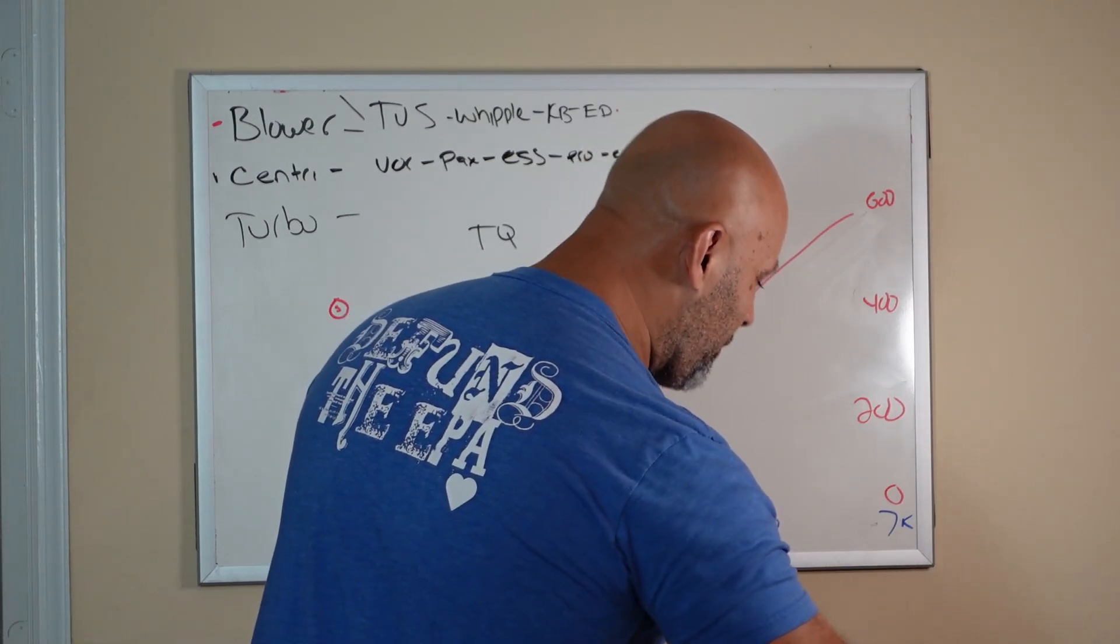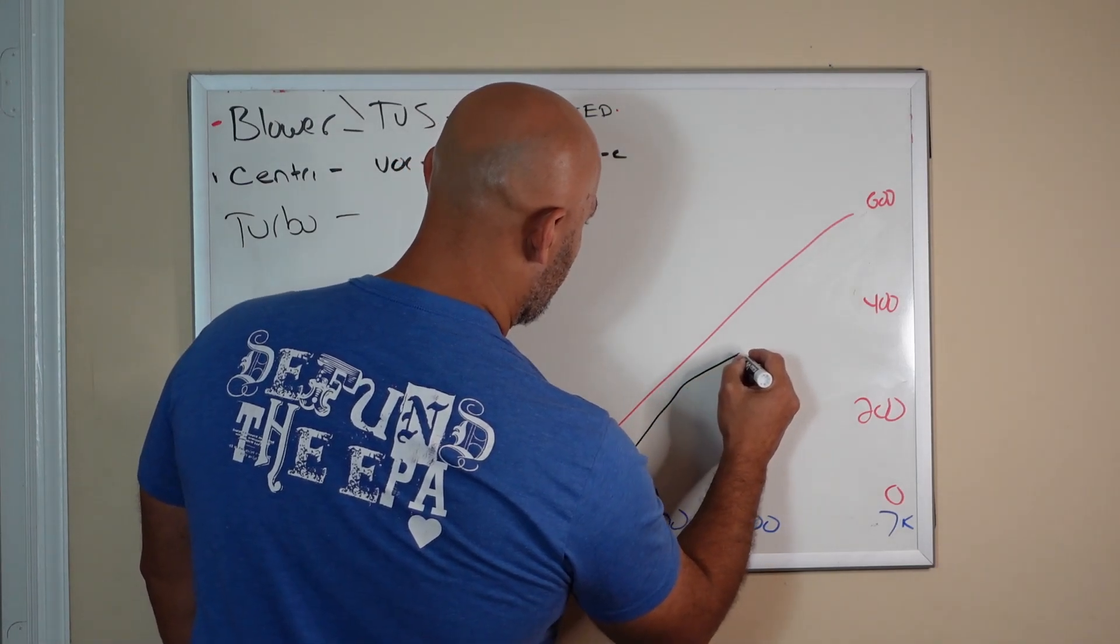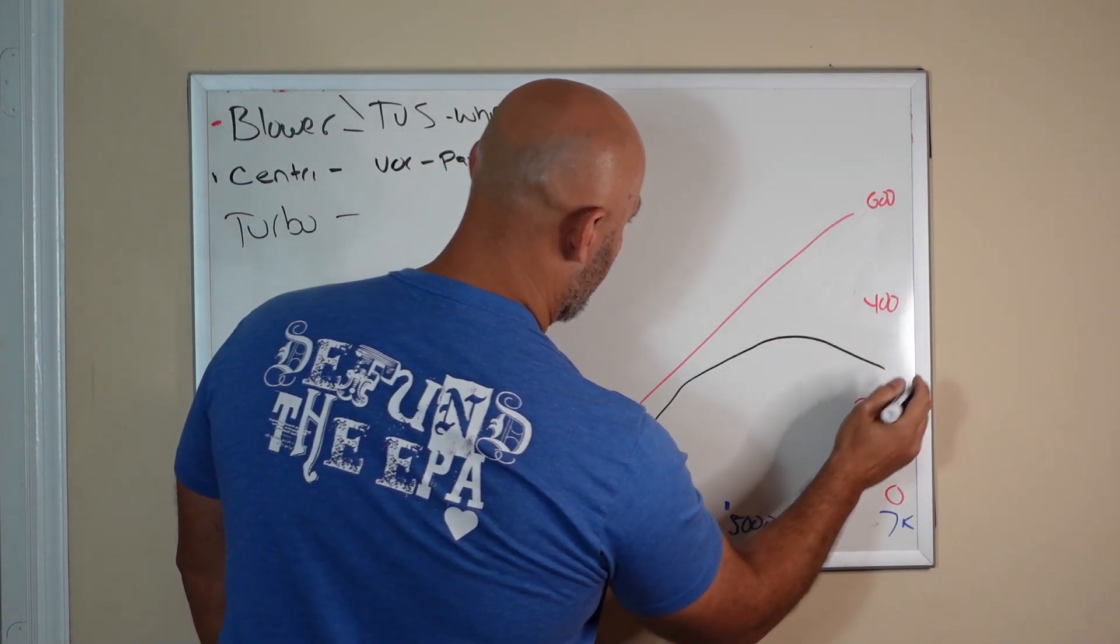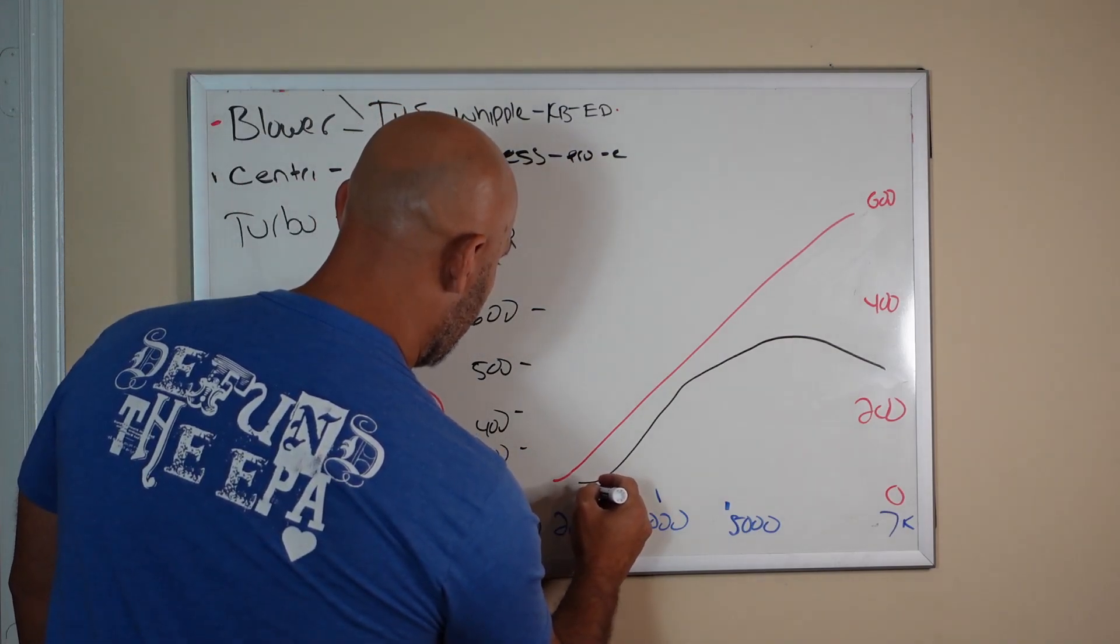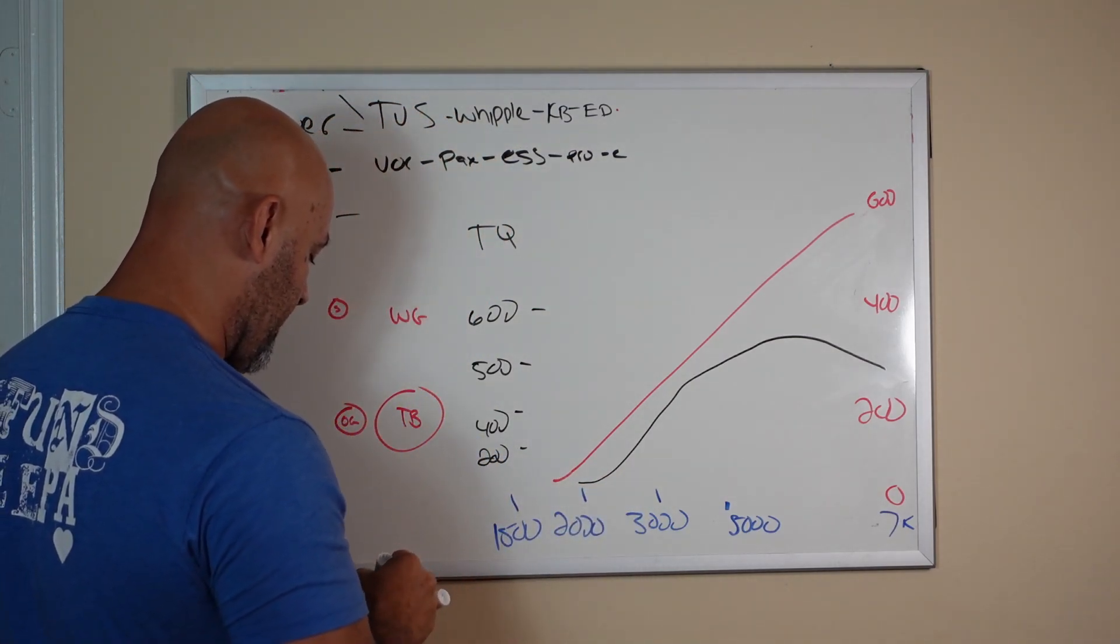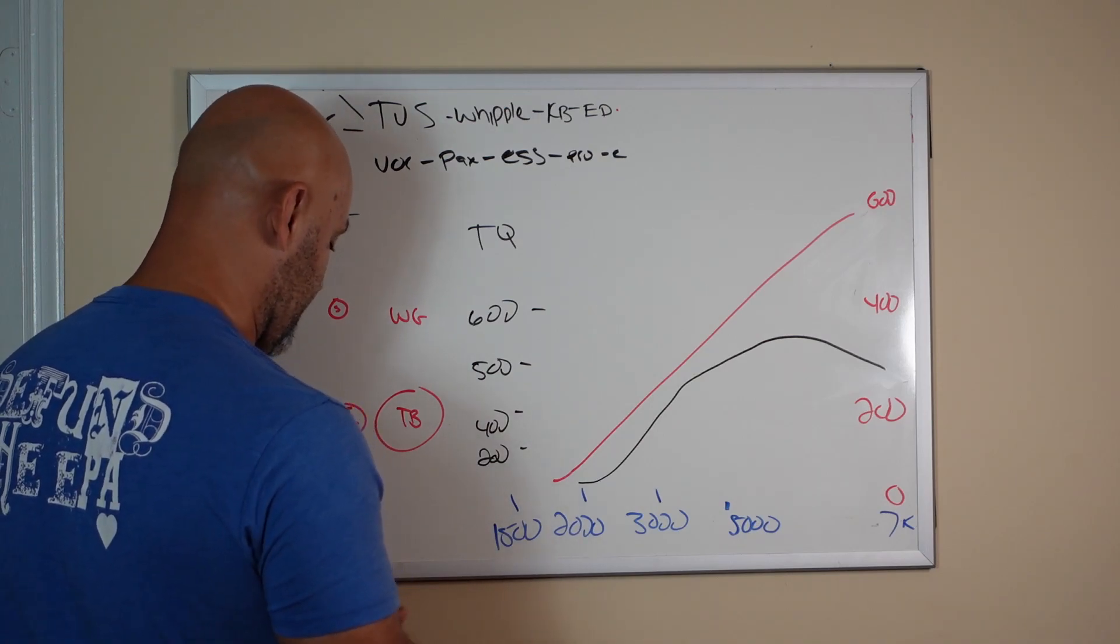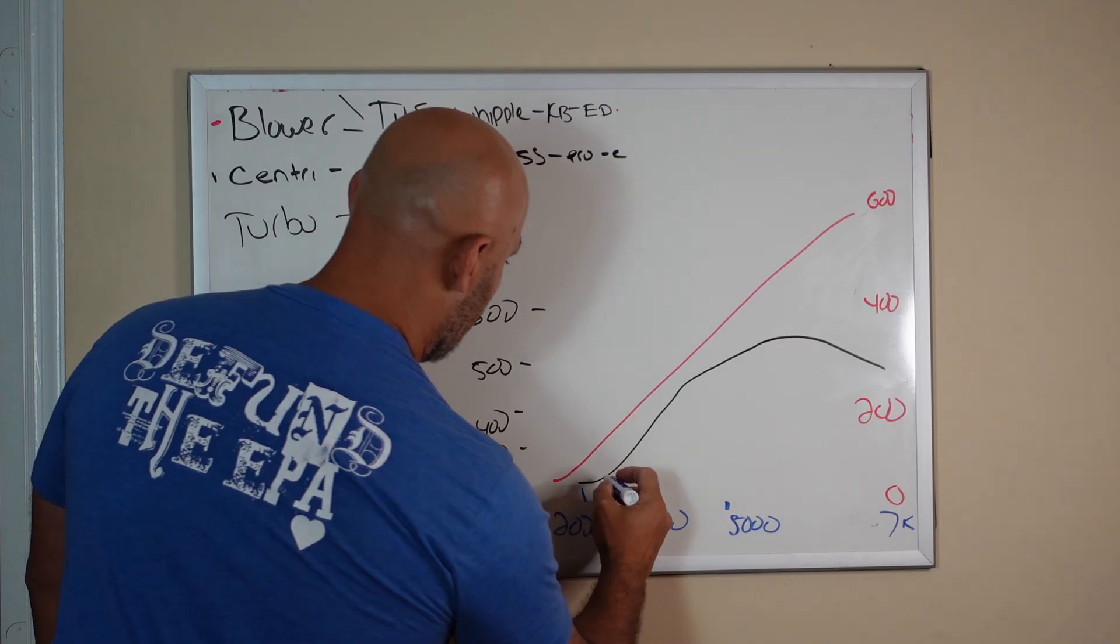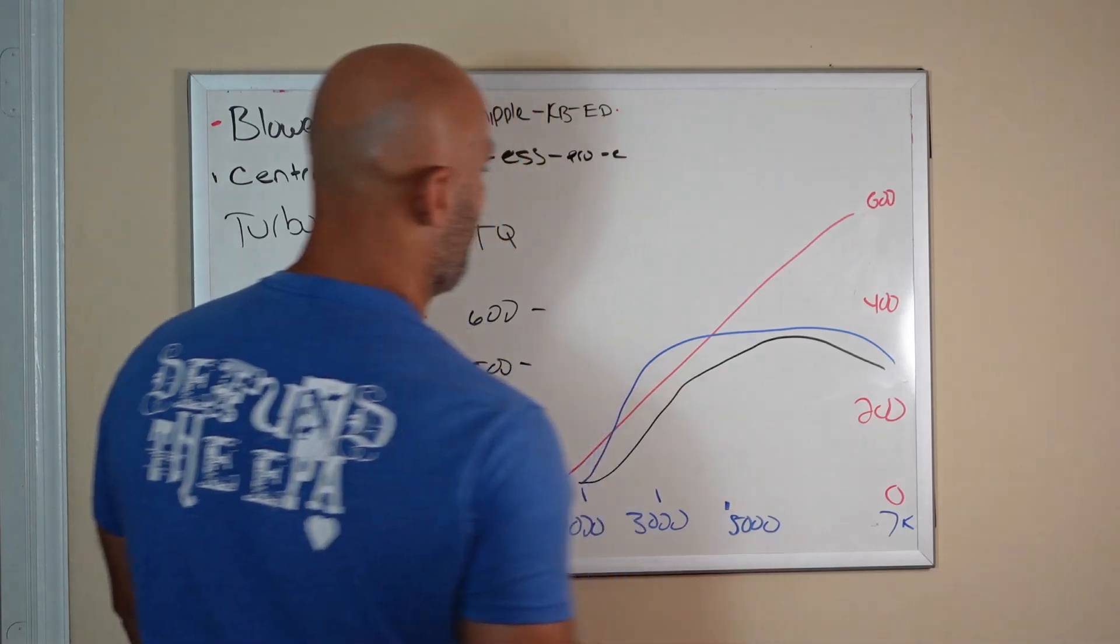And then torque is going to look a little better but still not exactly. Let's say it's a little sooner and then it trails off. So it's still not like with a Kenny Bell or a Whipple or TVS style where that sucker, like the blue line is what a Kenny Bell torque curve would look like. It would look more flat than trail off.